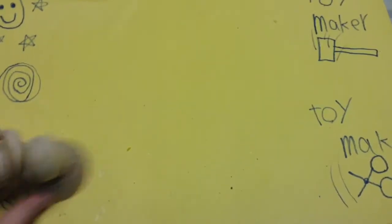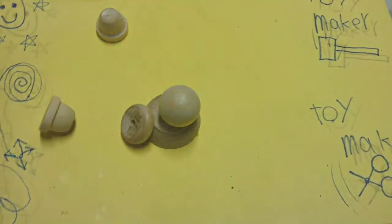So to make these toys you're going to need wooden shapes, felt, scissors, glue, and sharpies.